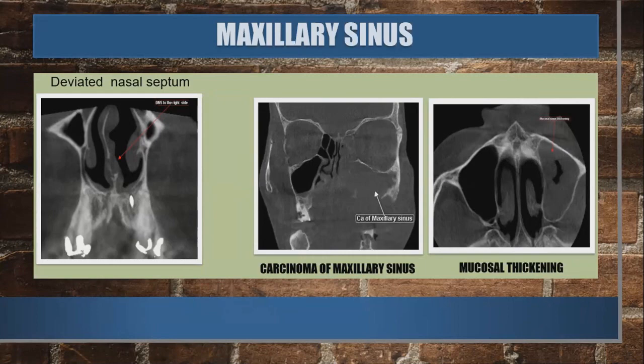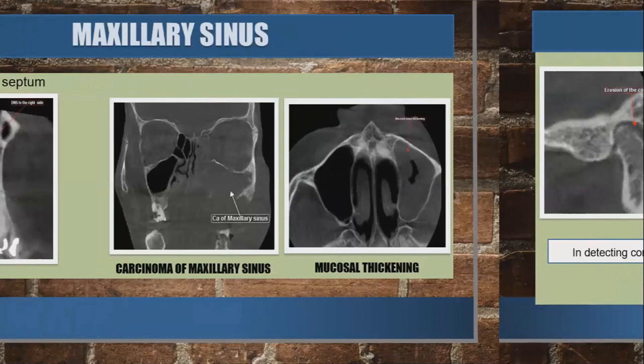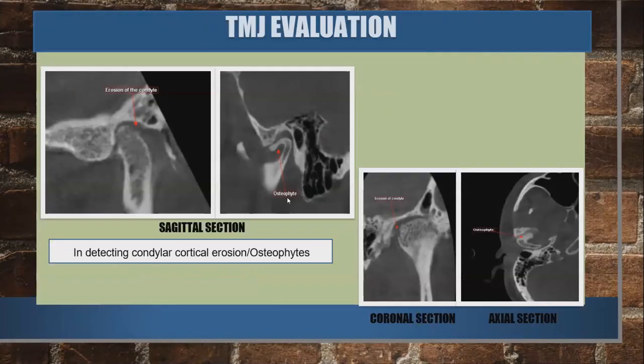For condylar changes, CBCT is the best imaging modality — better even than CT. Erosion of the condyle and bony osteophytes can be seen in different planes: in the axial plane, an osteophyte may appear as a parrot beak shape, while in the coronal plane it appears differently. Understanding how the image changes across planes is critically important for diagnosis.